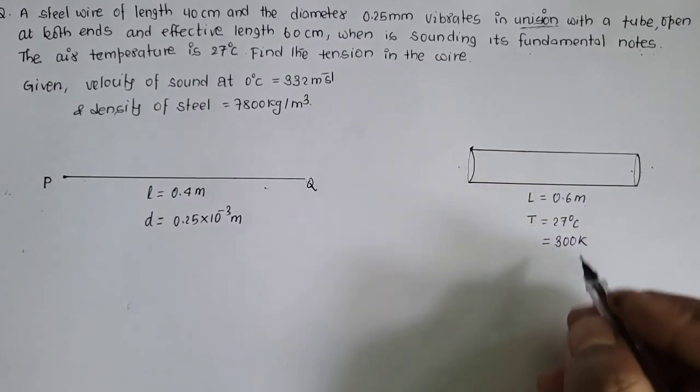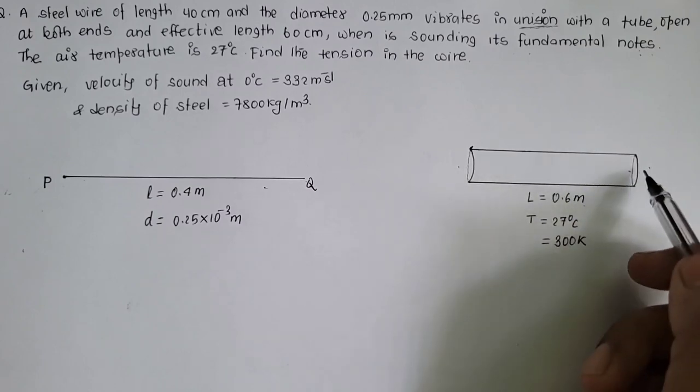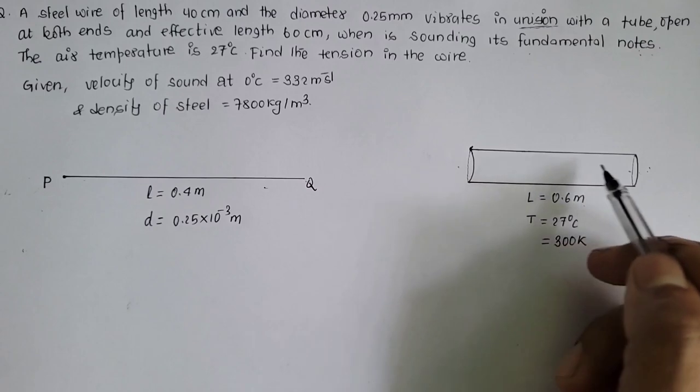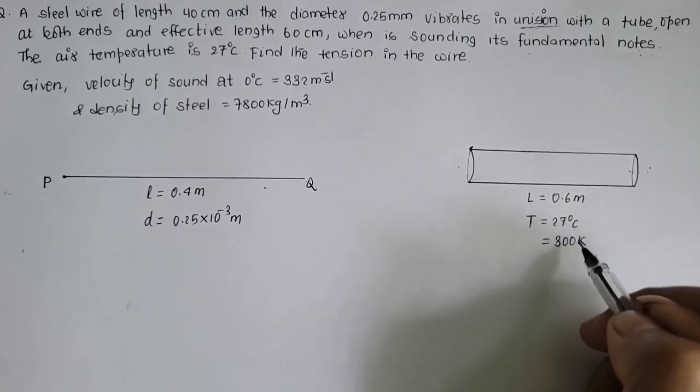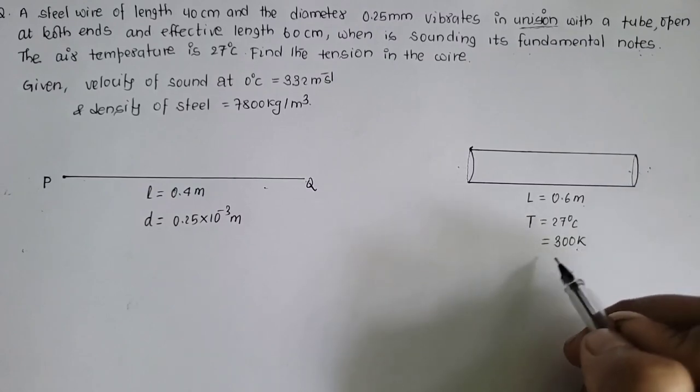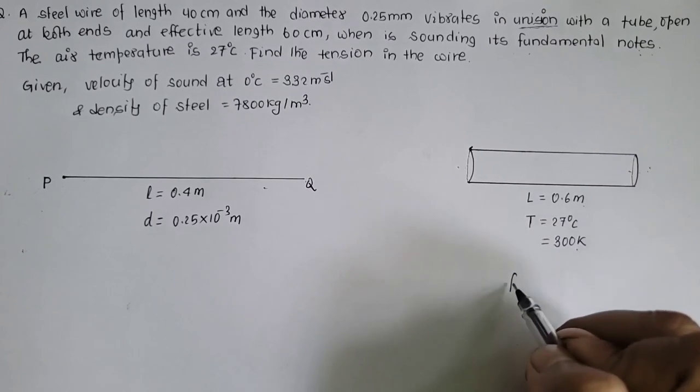Velocity of sound at 0 degree celsius dhekhu cha. Kuni pani organ pipe badh produce hunne sound ku frequency directly dependent hunch speed of sound in air sanga. It means yoo experiment gareku temperature 27 degree celsius ma gareku rish. Fundamental mode a vibration mah frequency nek also open in pipe.